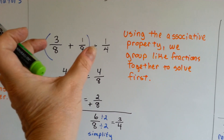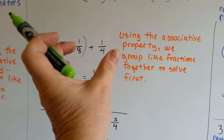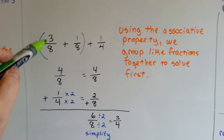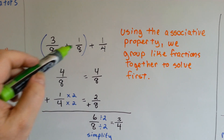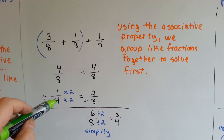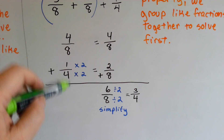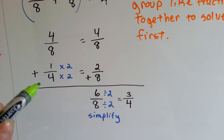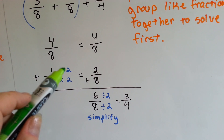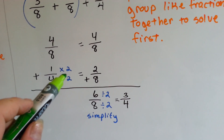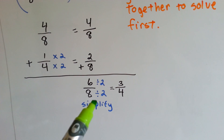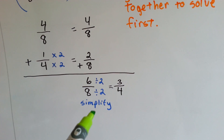We'll group these two together. If the eighths had been over here, we would have grouped them together this way. Now we can add 3 eighths and 1 eighth to get 4 eighths, and now we can add the 1 fourth. They can meet at eighths house, so 4 needs to be multiplied by 2. 1 gets jealous, it's multiplied by 2, and we end up with 4 eighths plus 2 eighths, which is 6 eighths.